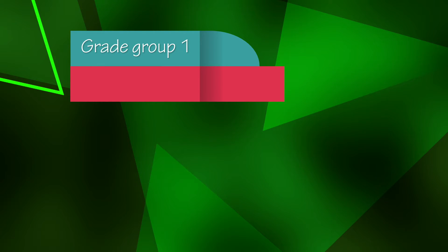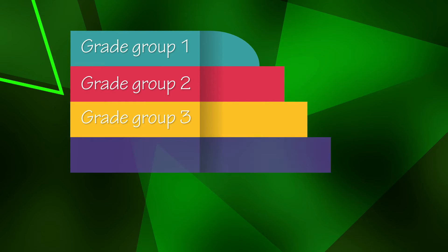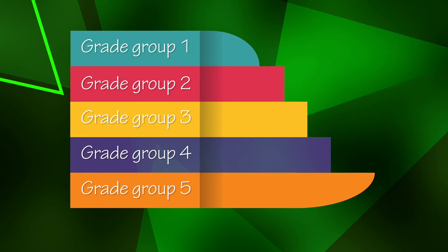Epstein proposed a new system of grade groups where the least risky grade group would be 1 and the highest risk grade group would be 5. Grade group 1 would now describe 3 plus 3 and replace Gleason score 6.